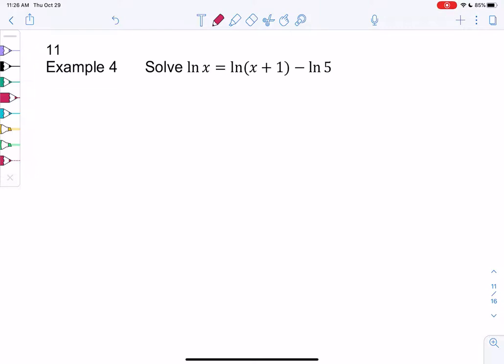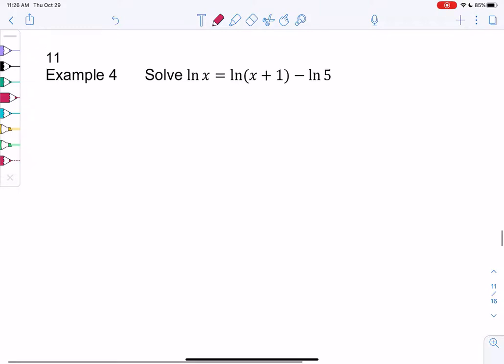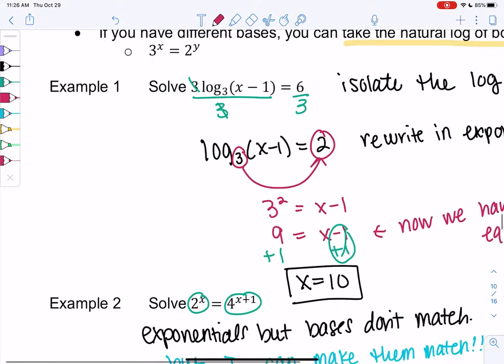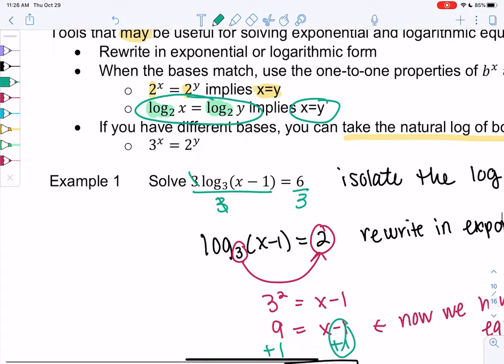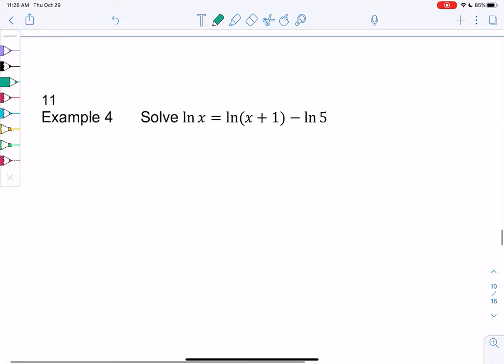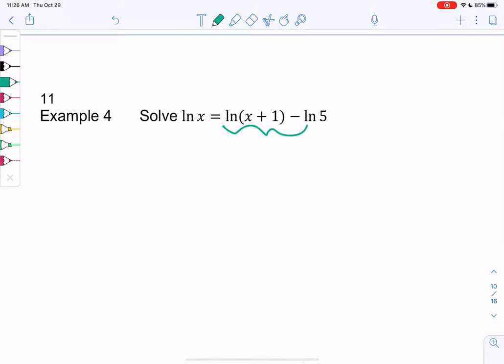So I can use the 1-to-1 property again here. I just have to make sure there's only one ln on both sides. So we can use the property when the logs are equal. So same thing here, as long as I only have one log on each side. I'm going to combine the logs on the right and we can use that property.